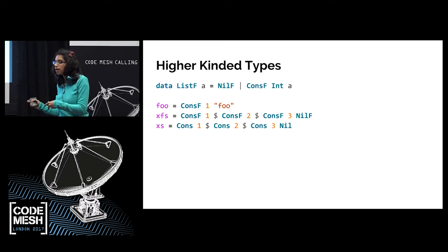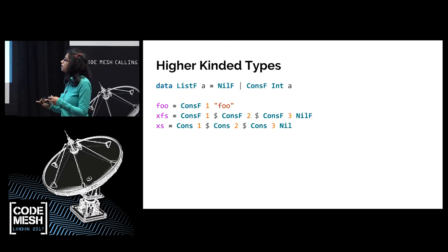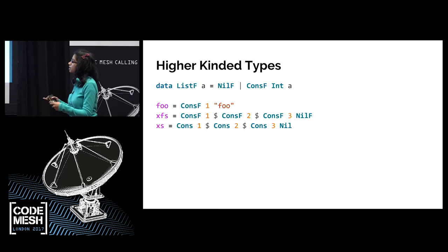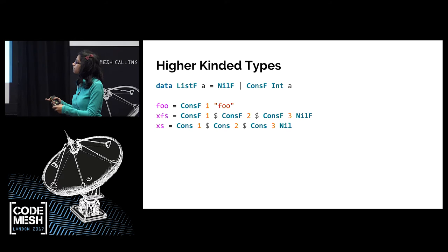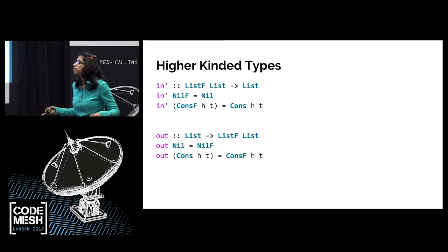Before I do that, I'm going to step back and look at our recursive data structure — our list — and do something interesting with it. I'm going to make it higher kinded, but not higher kinded in the way you normally see lists. I'm going to pull the recursive part out of it and make it a type parameter. So if you look at this thing, it's not a list anymore because I can put anything in there — I can put, for example, a string. I can write `foo` as `Cons_F 1 foo`, or I could repeatedly apply it to itself. If I repeatedly apply it to itself, it looks kind of like the list I initially had.